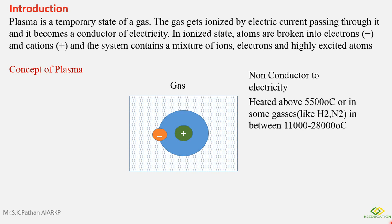When we supply heat to this gas atom up to 5500 degrees Celsius, or in some gases like hydrogen and nitrogen in between 11000 to 28000 degrees Celsius.